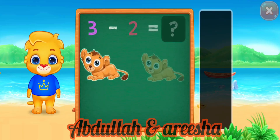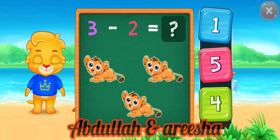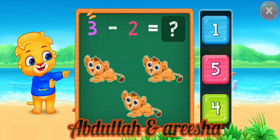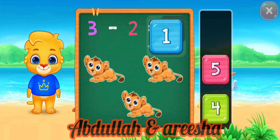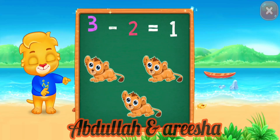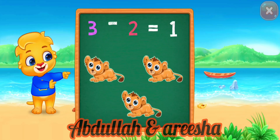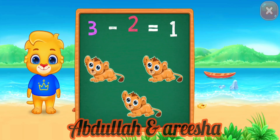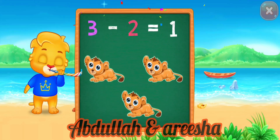3 minus 2 is equal 1. 1! Woohoo! 3 minus 2 equal 1. Peekaboo!